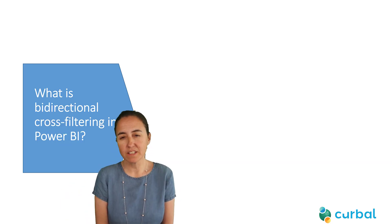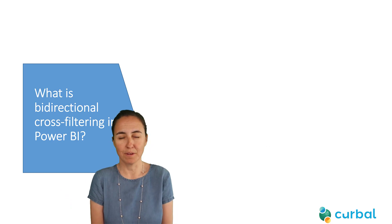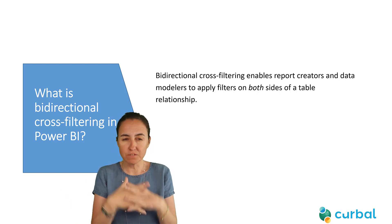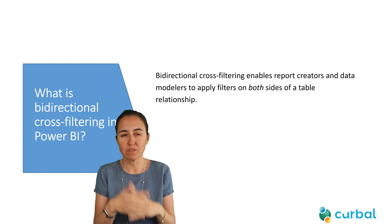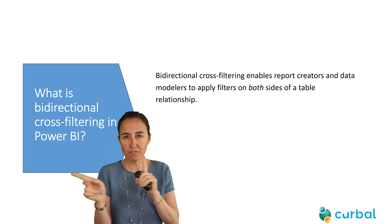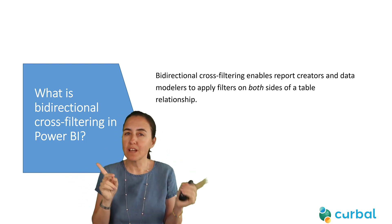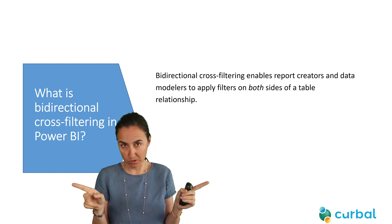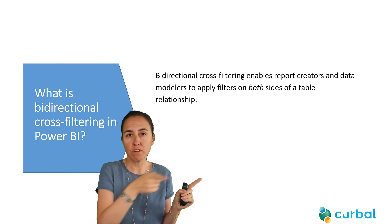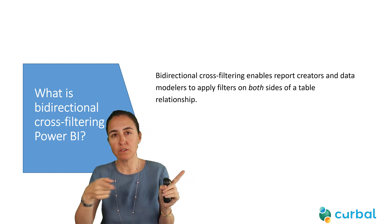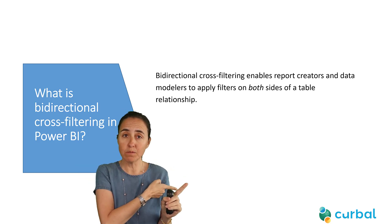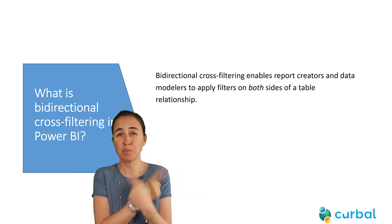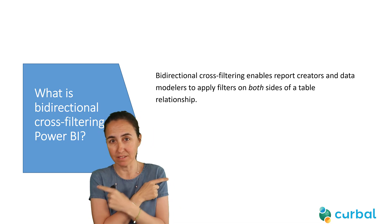What is bidirectional cross-filtering in Power BI? Bidirectional cross-filtering enables report creators and modelers to apply filters on both sides of a relationship between tables. With other relationship types, you can only apply filters on one table. The bidirectional relationship allows you to apply filters on both — that's the main distinction.